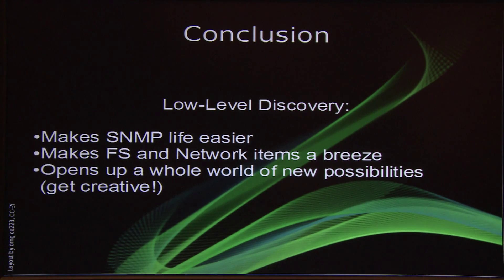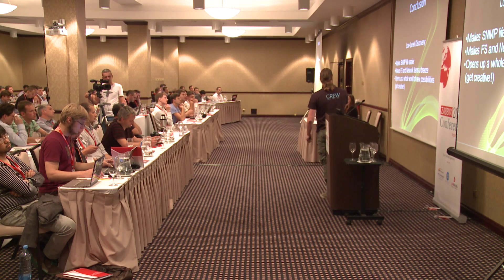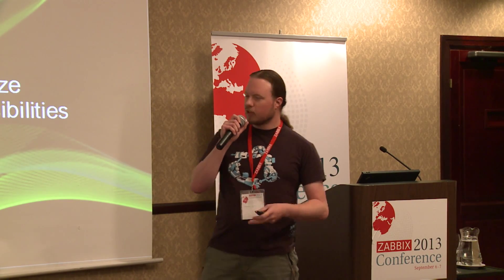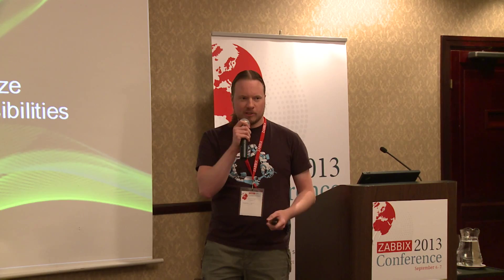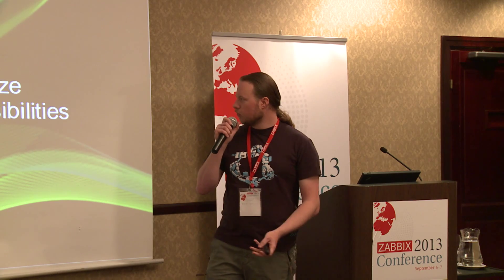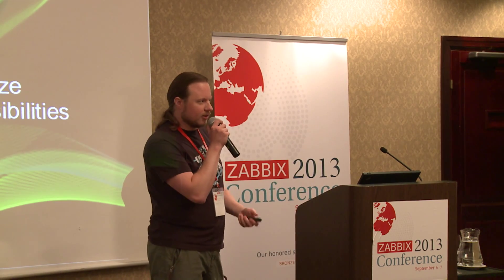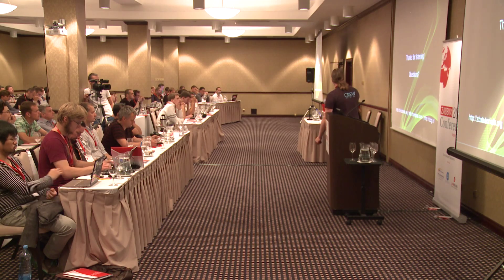Conclusion. Low-level discoveries make your SNMP life a lot easier because if you can do the SNMP walk and automatically discover all your interfaces, you don't have to have a template of 10,000 items — it'll just generate it for you on the fly. With normal templates on agents you also have a lot of items for your disks and whatever; this turns it into one item that you have to support and the rest is automatically generated. It just opens up a whole world of new possibilities. If you're really creative, you can basically push almost anything into Zabbix and it'll start automatically monitoring for you. Any questions?